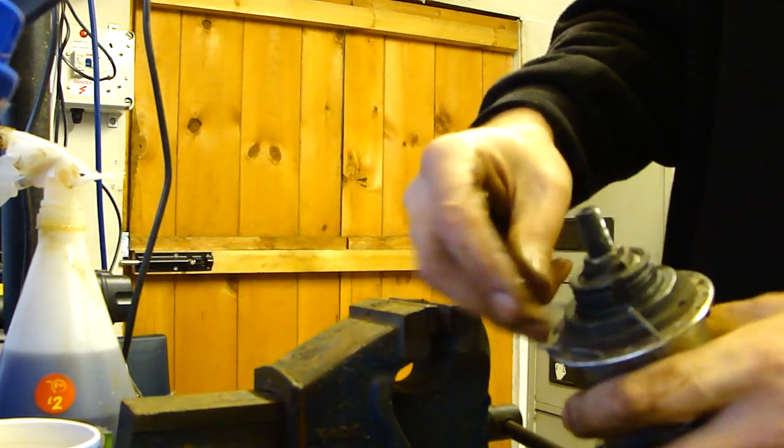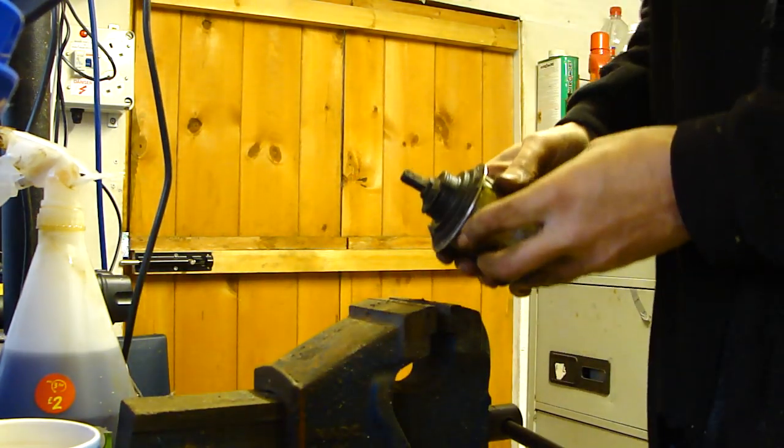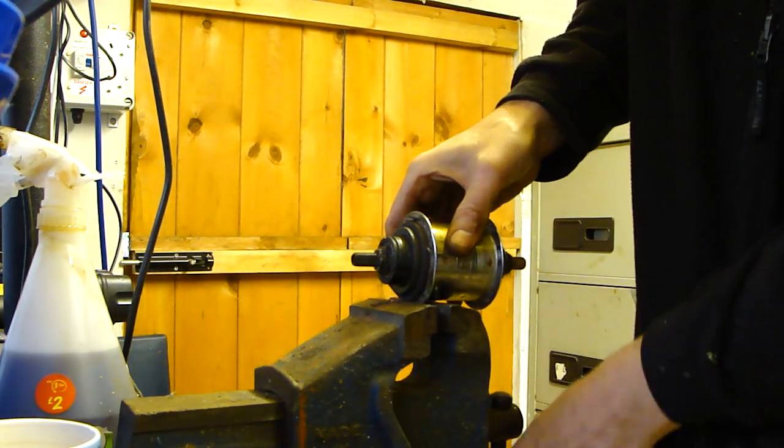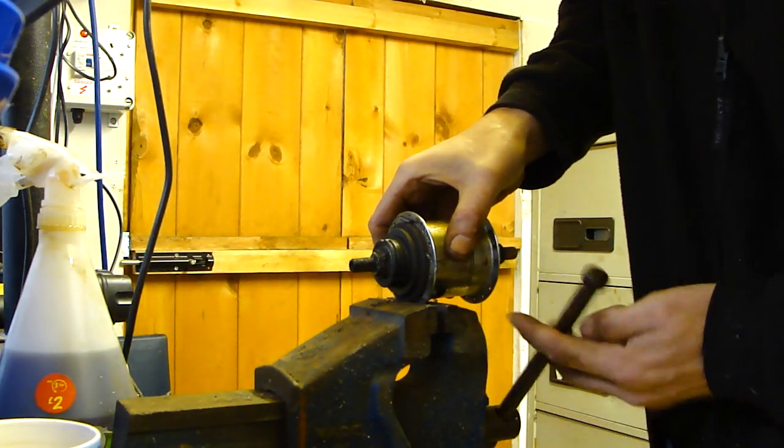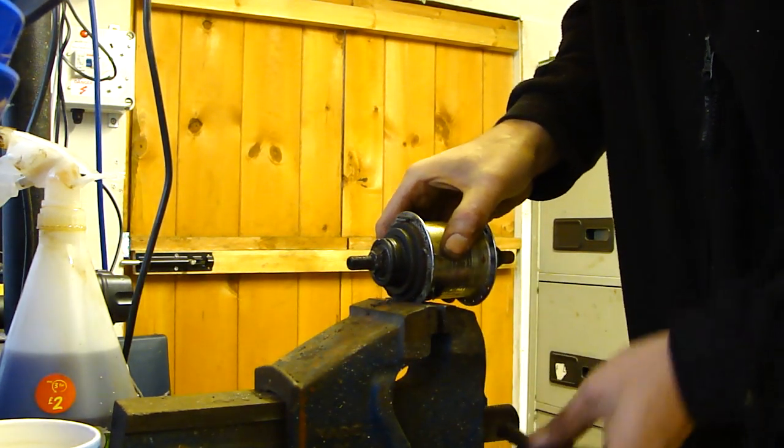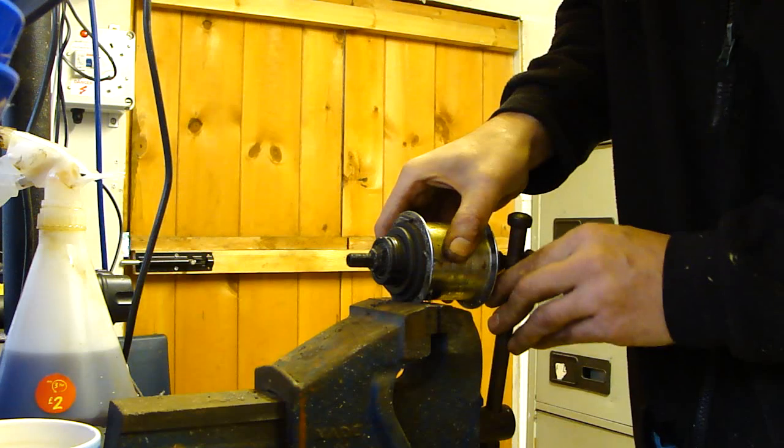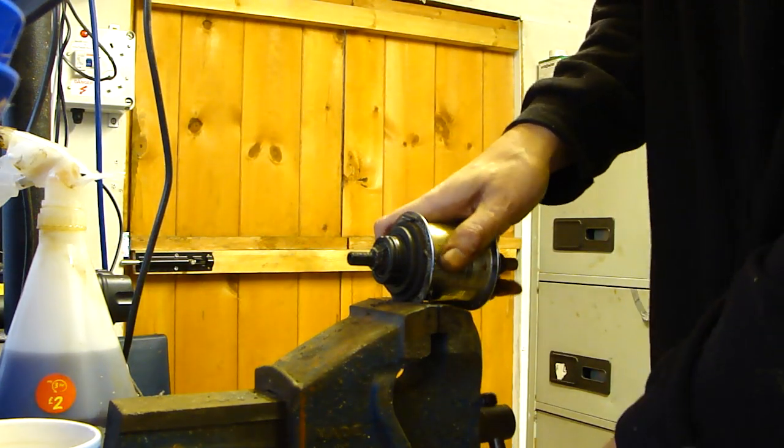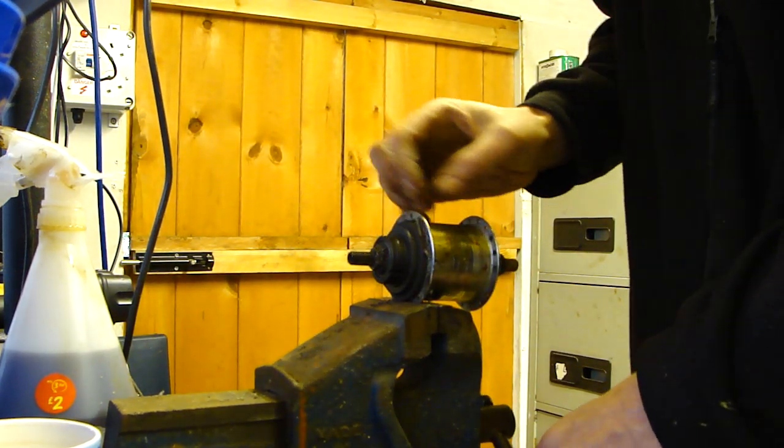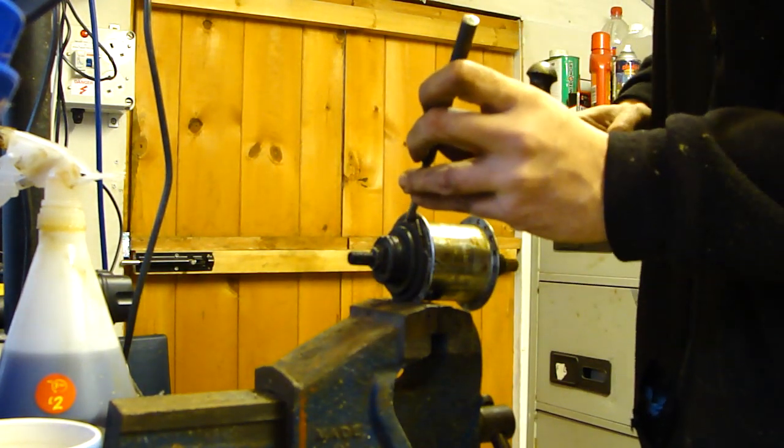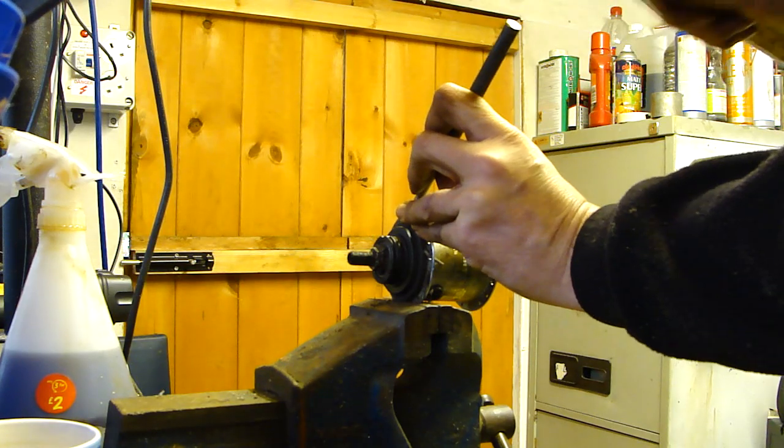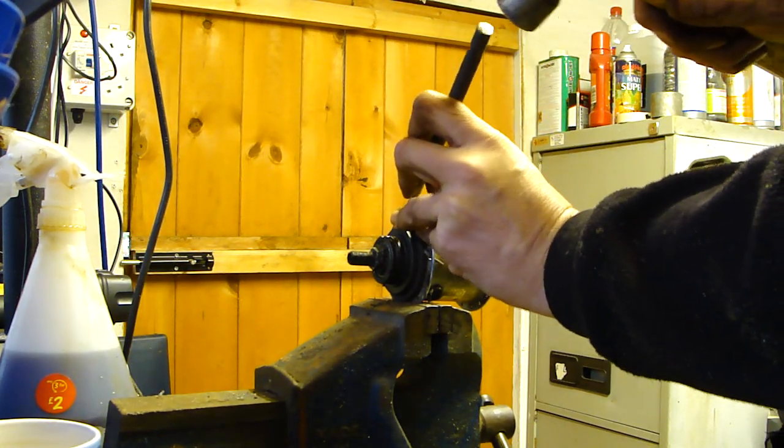What you do is you place the flanges there into the vice, good and nice and tight. And then with a bit of luck you can get your hammer and your punch into the little groove there and give it a crack, see what happens.